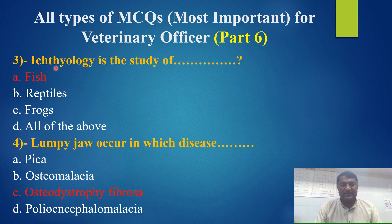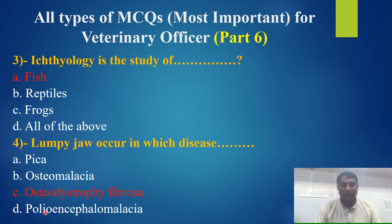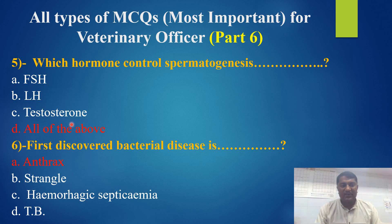Etiology is the study of — fish, reptiles, frogs, or all of the above? The best answer is fish. Lumpy jaw occurs in which disease — pica, osteomalacia, osteodystrophy fibrosa, or polioencephalomalacia? The best answer is osteodystrophy fibrosa. Which hormone controls spermatogenesis — FSH, LH, testosterone, or all of the above? The best answer is all of the above.